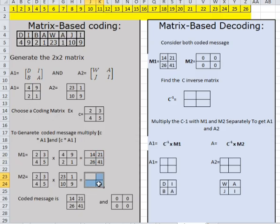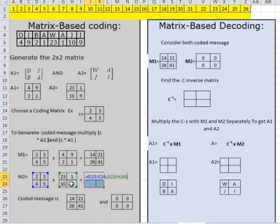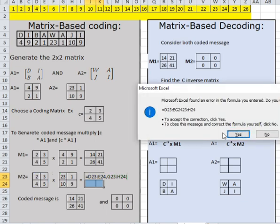This is the coded result — my name will be coded into some other values. Next I am going to do the same: put the comma, then select the second matrix, close the bracket, Ctrl+Shift+Enter.